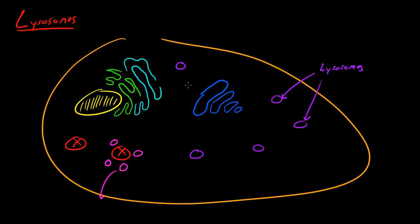So say that we have an organelle, I'll just say this ER right here. Well say that something happened to the ER, caused it to die. What these lysosomes would do is they would go and surround this and start breaking it up into smaller pieces.